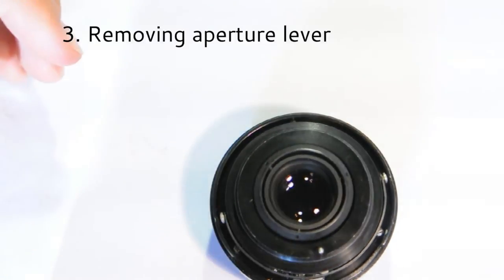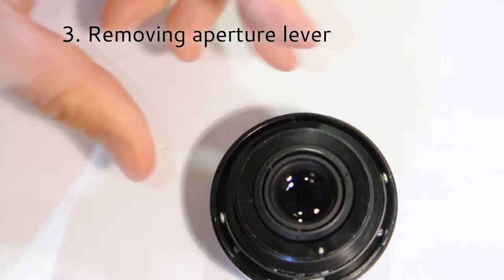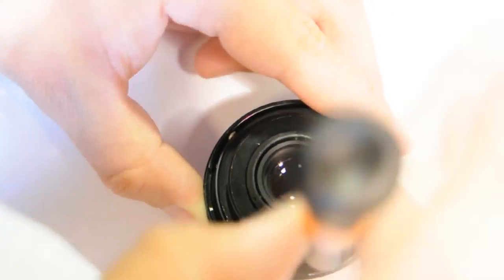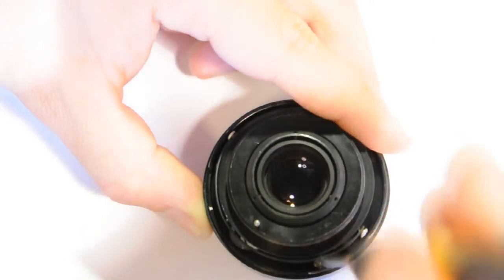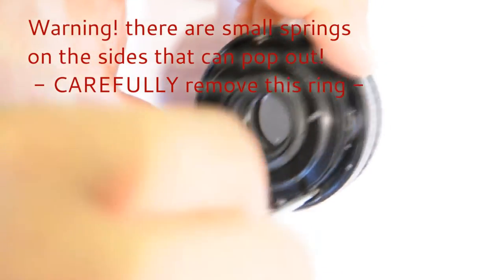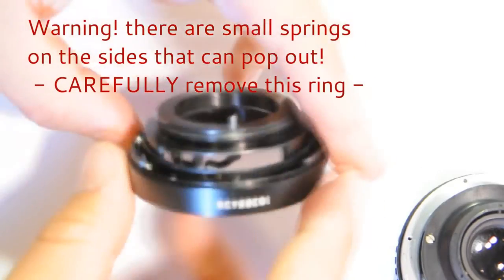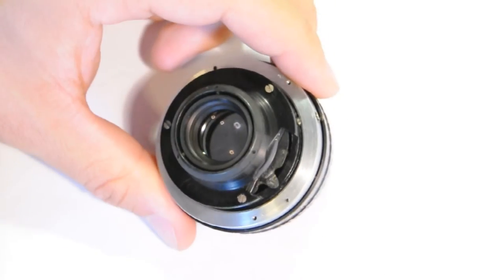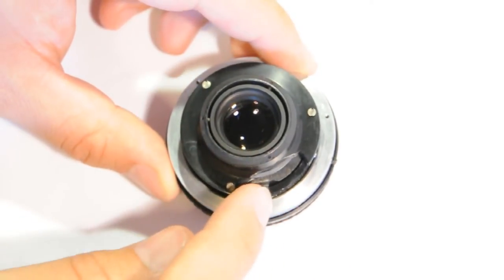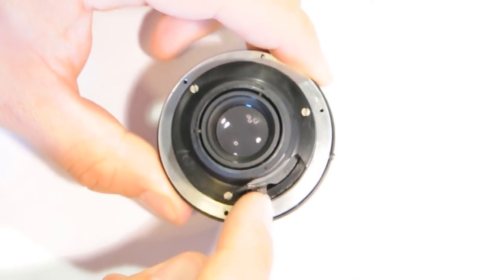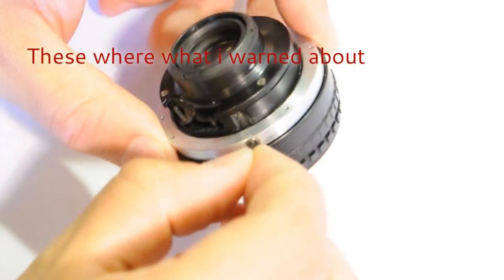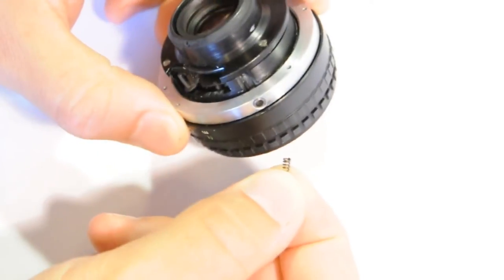There's three screws here. Here is the lens system and the diaphragm. The diaphragm is activated by pushing this button. You can see the blades coming out there. Be careful because there are these small springs here which will easily pop out.